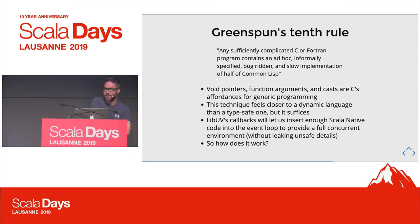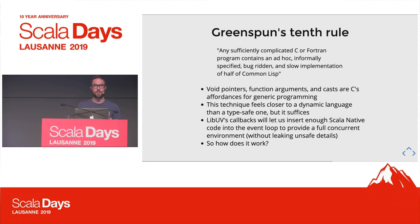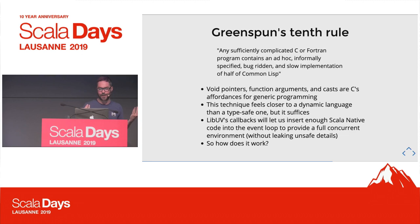This reminds me of Greenspun's 10th Rule: any sufficiently complicated C or Fortran program contains an ad hoc, informally specified, bug-ridden, and slow implementation of half of Common Lisp. The techniques I've shown you — void pointers, function arguments, and casts — are C affordances for generic programming, but they're also just how you implement a dynamic language in C. The errors you get when you do this wrong are closer to Python or JavaScript errors — a field that isn't there, or a function that isn't there. But this suffices to make it work and provide a safe wrapper on top of LibUV's API surface.